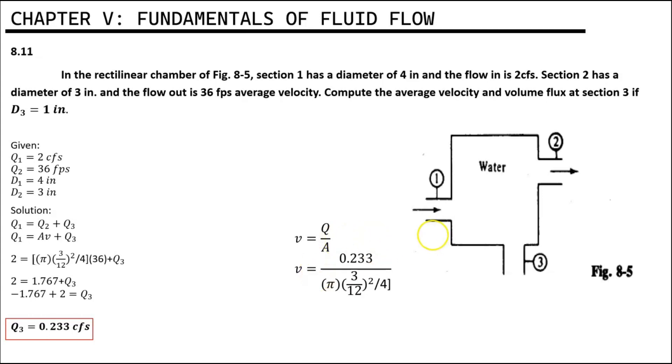By simplifying this equation, we get the value of V which is equal to 42.7 FPS.